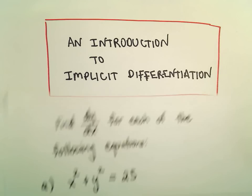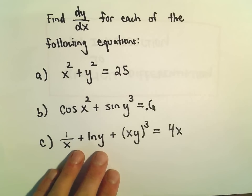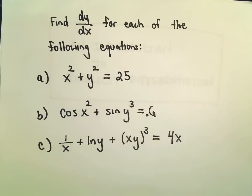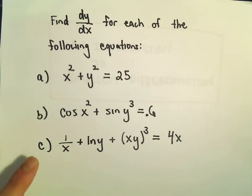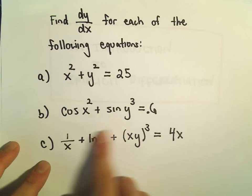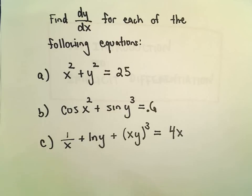Here we're going to do some more examples related to implicit differentiation. These equations are now implicit equations — we kind of have the x and the y on the same side of the equal sign. That's what I look for; that's what clues me in.